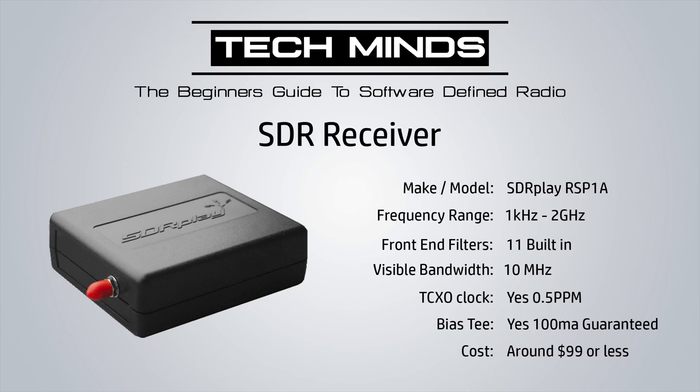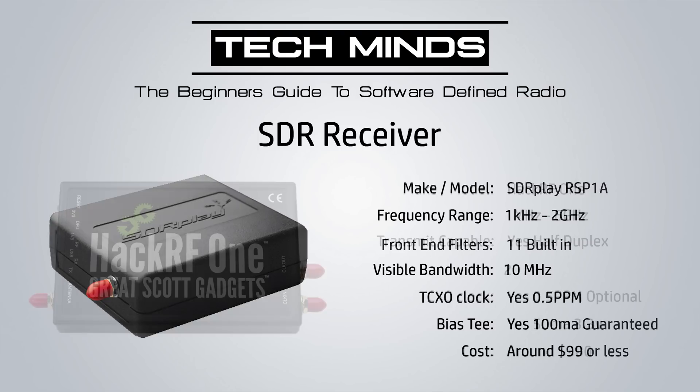It also has a TCXO and a bias-T up to 100mA. The price has hiked up quite a bit — you're at around $99 — but you get what you pay for. You're really paying for the extra sensitivity and the ability to receive all the way from 1kHz up to 2GHz without needing an up converter.